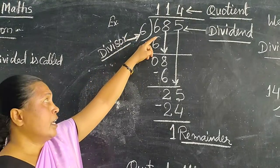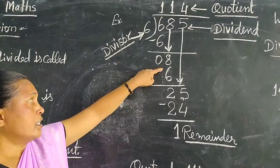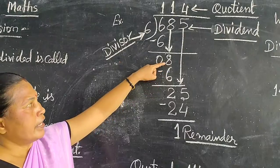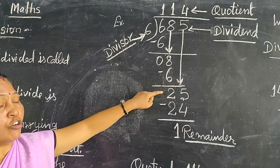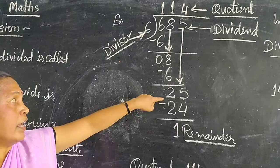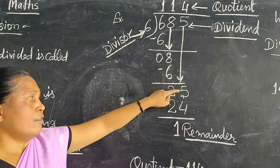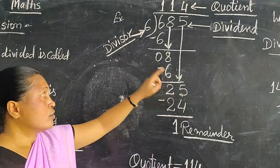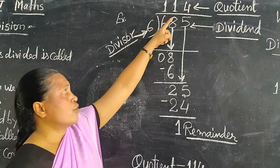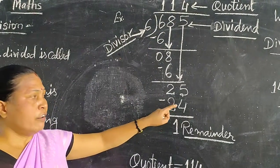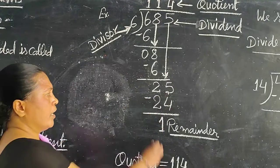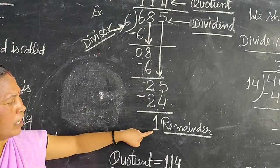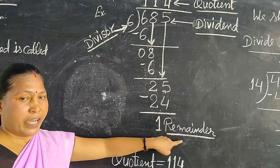Bring down eight. Eight divide by six. Six one is six, and eight minus six equals two. And then five will come here. So, here is twenty-five. We divide twenty-five by six. Six goes into twenty-four. Twenty-five minus twenty-four equals one. So, one is the remainder.